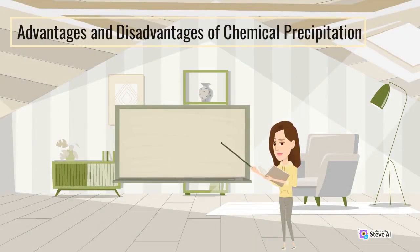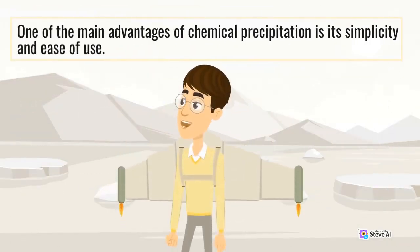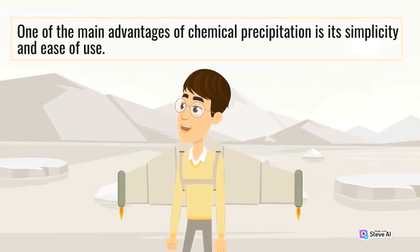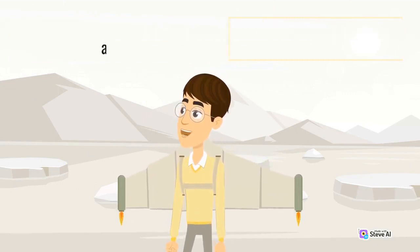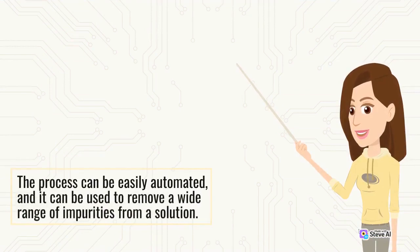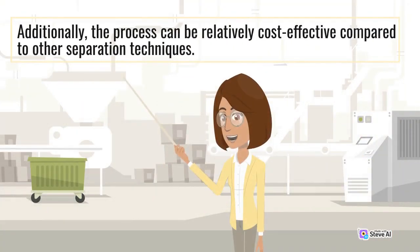Advantages and disadvantages of chemical precipitation: One of the main advantages of chemical precipitation is its simplicity and ease of use. The process can be easily automated, and it can be used to remove a wide range of impurities from a solution. Additionally, the process can be relatively cost-effective compared to other separation techniques.